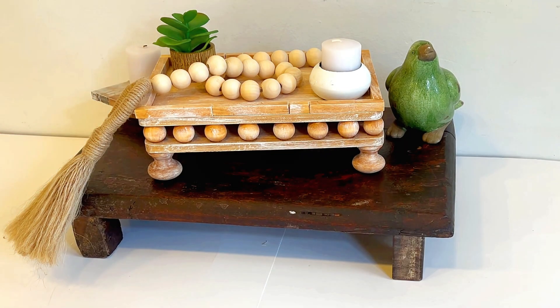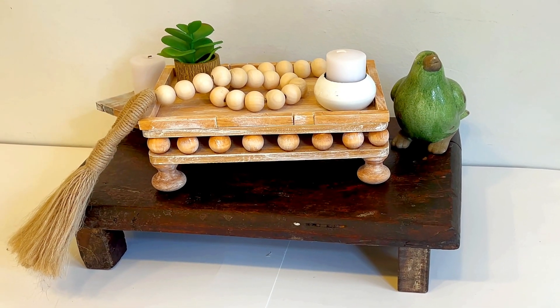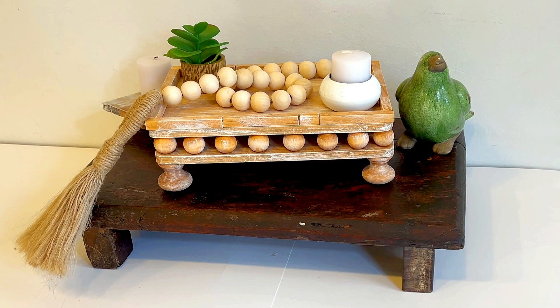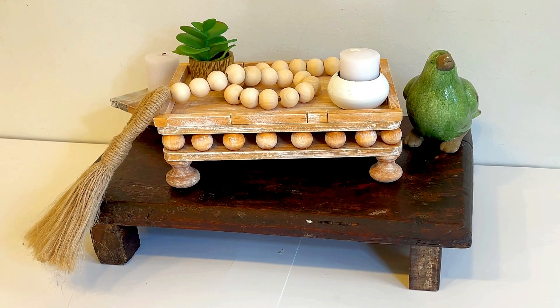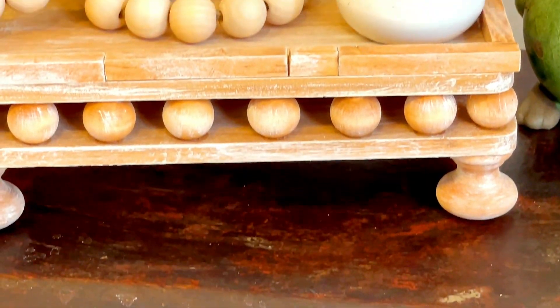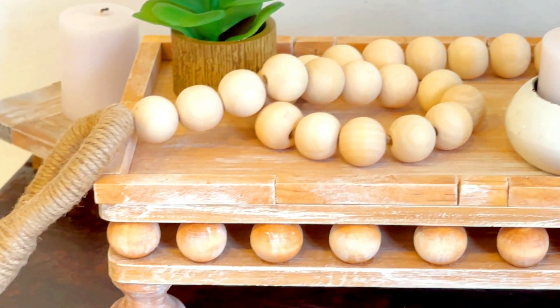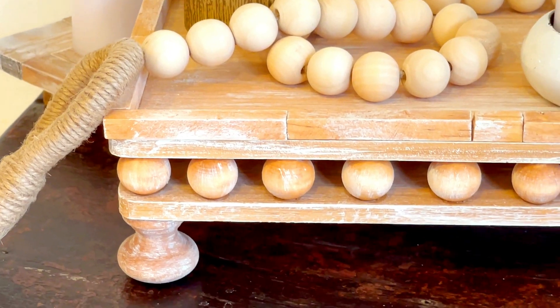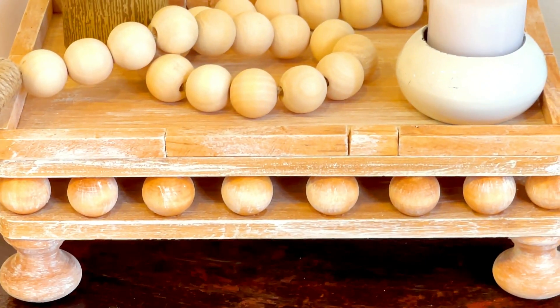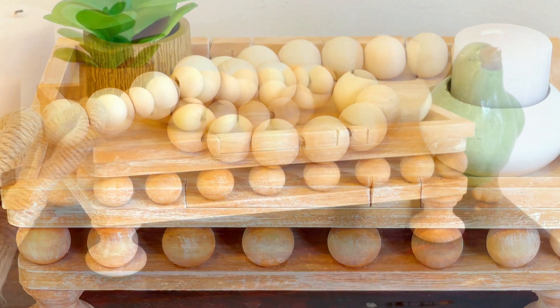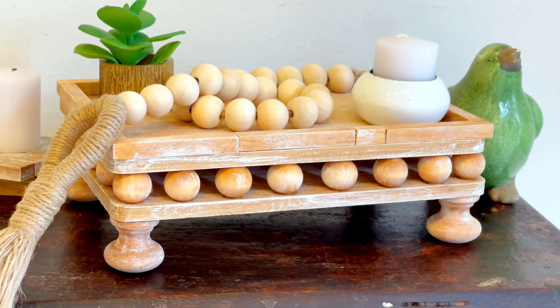And this is how my Dollar Tree Spring Farmhouse Tray turned out. I really like how this tray ended up looking. Farmhouse is not my usual vibe for my DIYs but I am really liking this. I like the pale but warm colors in the wood and even though every component of this tray is a different kind of wood, I think they all end up with a very cohesive look.